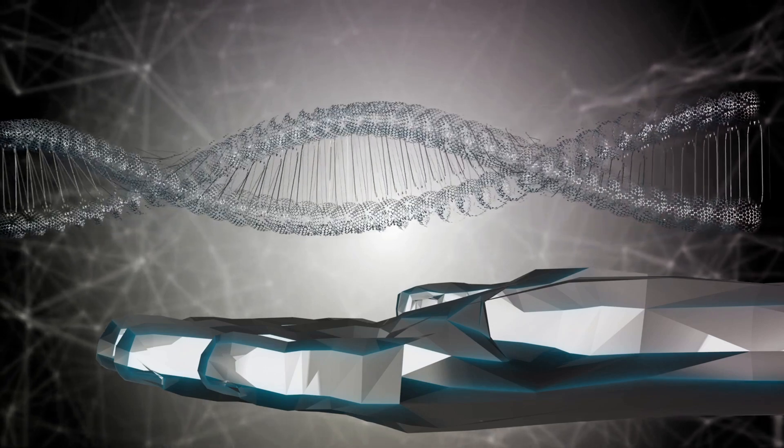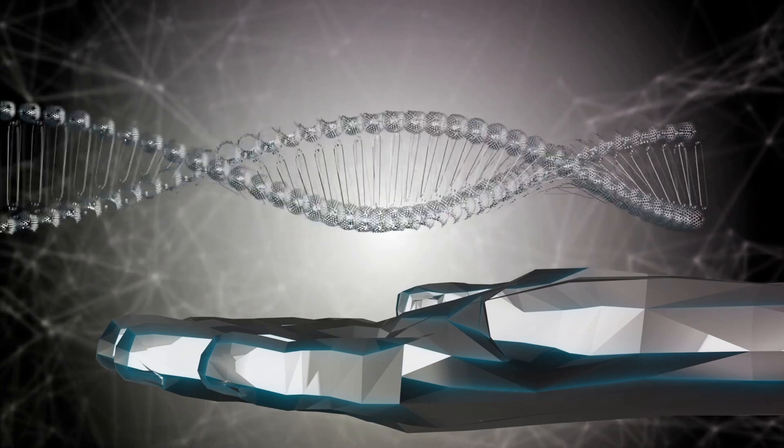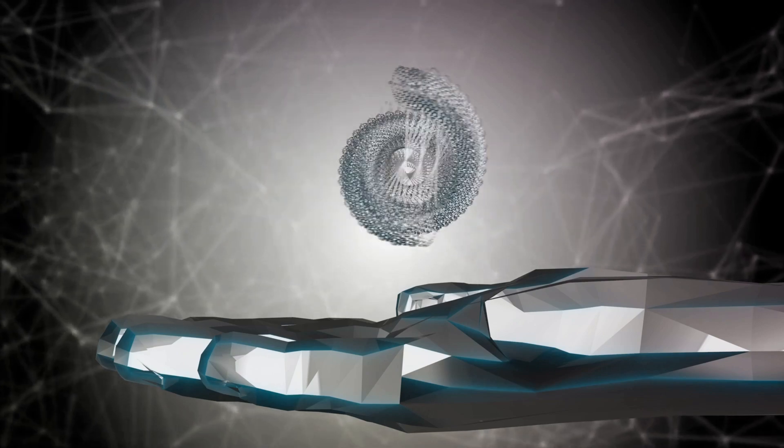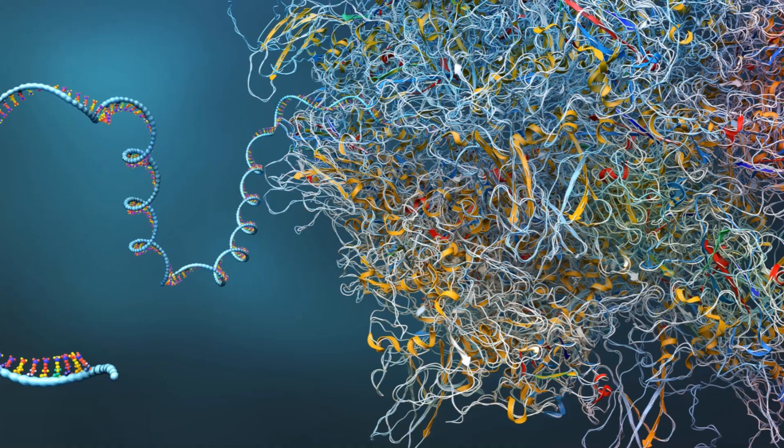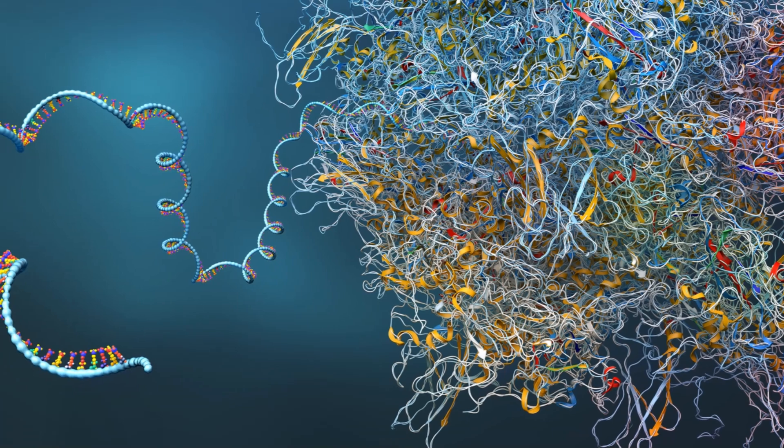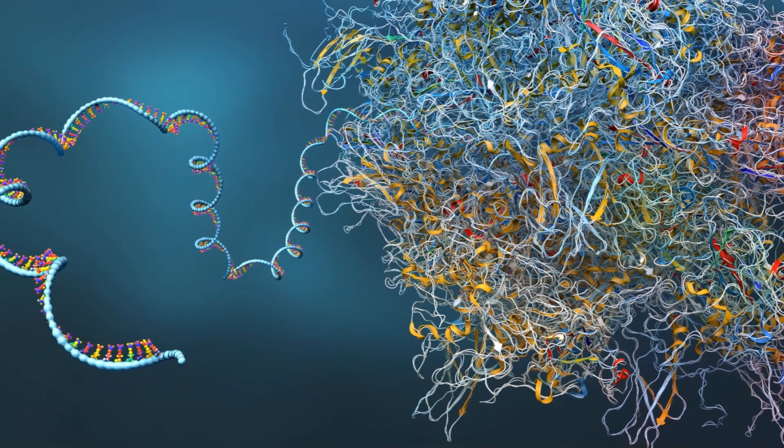Another key novelty is that AlphaFold3 can also predict the structure of RNA molecules, which play vital roles in our cells. This was something that was beyond the reach of AlphaFold2, and it opens up a whole new world of possibilities for biological research.